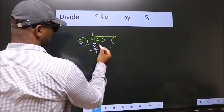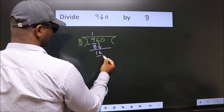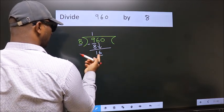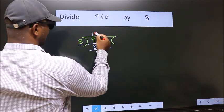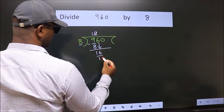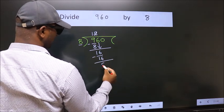After this, bring down the beside number. So, 6 down. So, 16. When do we get 16? In 8 table. 8 twos, 16. Now, we subtract. We get 0.